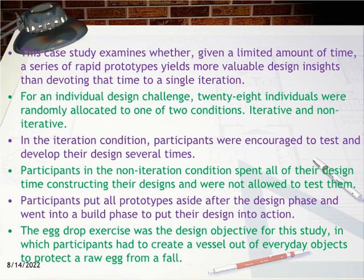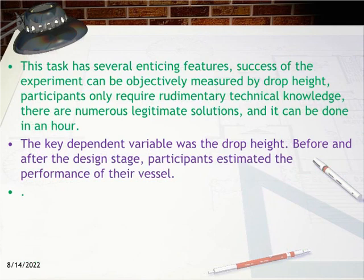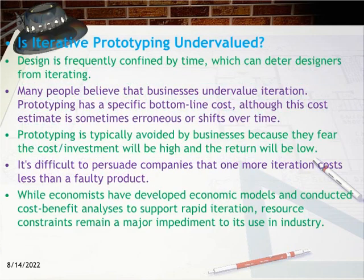Participants put all prototypes aside after the design phase and went into a build phase to put their design into action. The egg drop exercise was the design objective for this study, in which participants had to create a vessel out of everyday objects to protect a raw egg from a fall. This task has several enticing features: success can be objectively measured by drop height, participants only require rudimentary technical knowledge, there are numerous legitimate solutions, and it can be done in an hour. The key dependent variable was the drop height. Before and after the design stage, participants estimated the performance of their vessel.